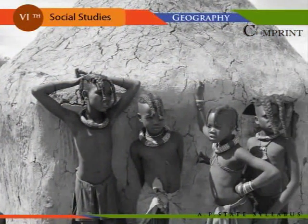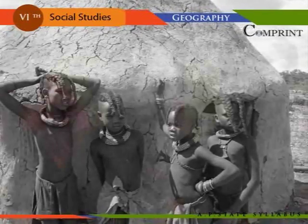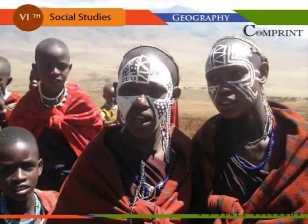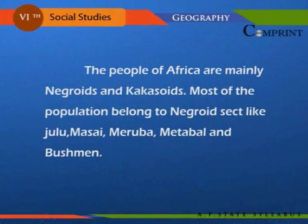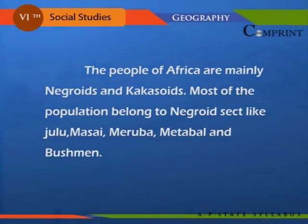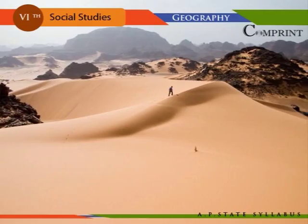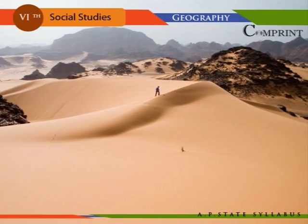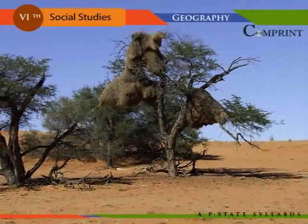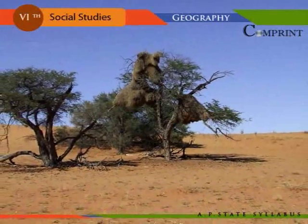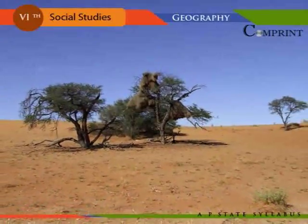Very few people, like nomadic tribes, are found in the Sahara desert, the Kalahari desert, and in equatorial dense forest regions. The people of Africa are mainly Negroids and Caucasoids; most of the population belongs to Negroid groups like Zulu, Maasai, and Bushmen. The heat is unbearable in the Sahara, which covers major parts of North Africa. In the Kalahari, rainfall is meager, water is scarce, and cultivation of crops is not possible.